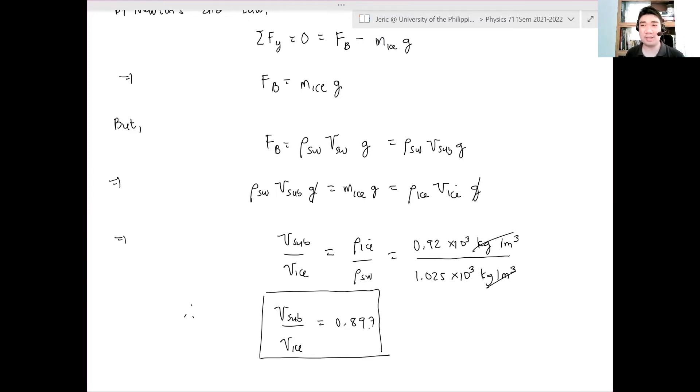So, that's about 0.897. That's the fraction, or I should say, the part of the ice that is immersed in seawater. Questions?